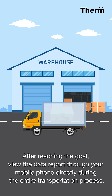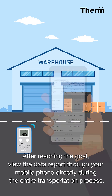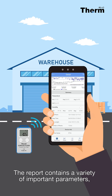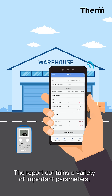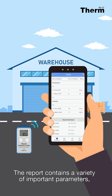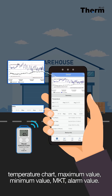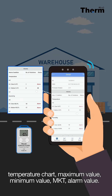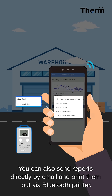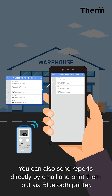After reaching the destination, view the data report through your mobile phone directly. During the entire transportation process, the report contains a variety of important parameters: temperature chart, maximum value, minimum value, MKT, and alarm value. You can also send reports directly by email and print them out via Bluetooth printer.